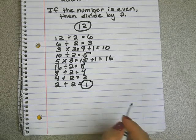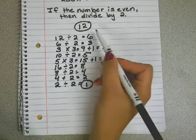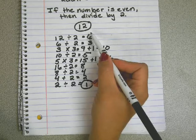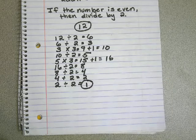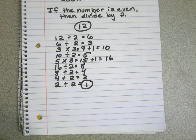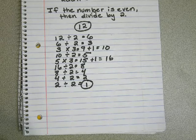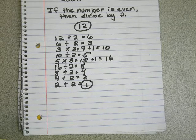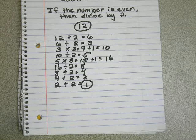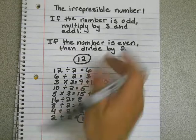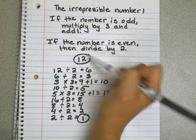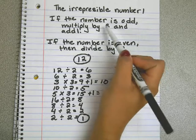It is the belief that no matter which number we begin with—here we started with twelve—you will eventually get to one. So, what I want you to figure out is does this really work for all numbers? Mathematicians have been working on this since the 1930s and there is no answer as to why it works.